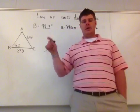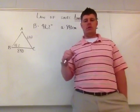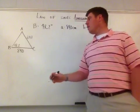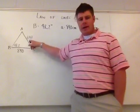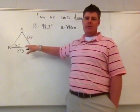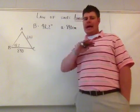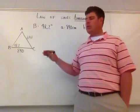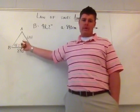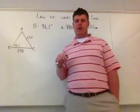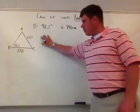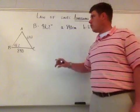Side-angle-side and side-side-side congruencies are used for the Law of Cosines. That's why I draw the triangle — I've got two sides and an angle not in between them, so this is side-side-angle. If the angle were between the sides, I'd have side-angle-side, which uses Law of Cosines. The Law of Sines is based on angles that are opposite to a known side.